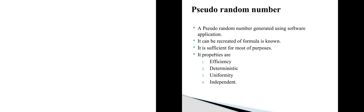The third property is uniformity and the fourth is independence. Whatever input is used to generate the pseudo-random number, the same pseudo-random number cannot be generated a second time, so it is independent. If the formula is known, we can recreate the same random number; if it is not known, a different random number is generated. These are the properties of the pseudo-random number.